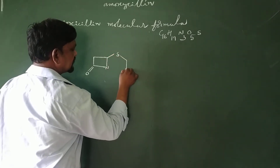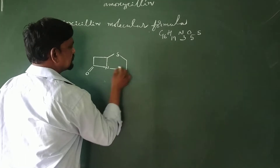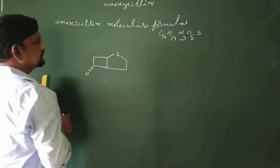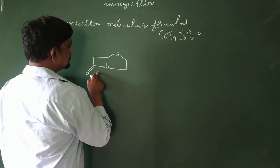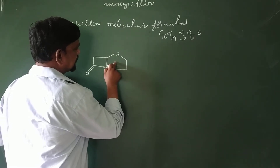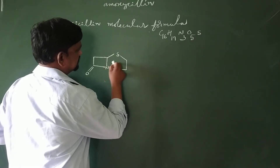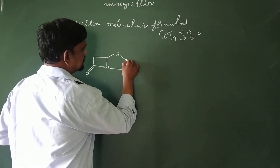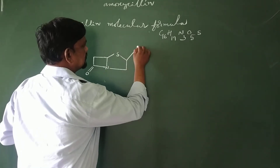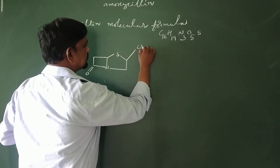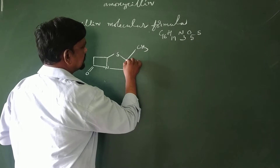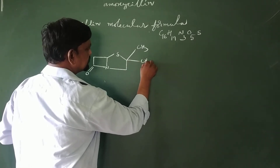This is a 5-membered ring. The beta-lactam is fused with the 5-membered thiazolidine ring — that means the presence of sulfur. It is connected to a methyl group, and this position also has a methyl group.